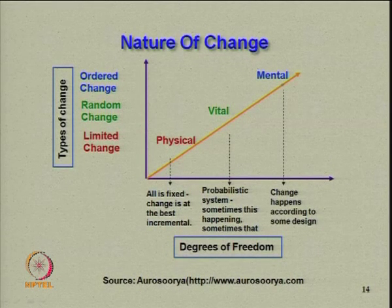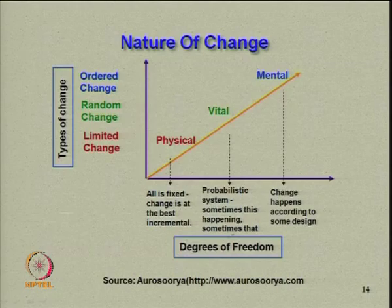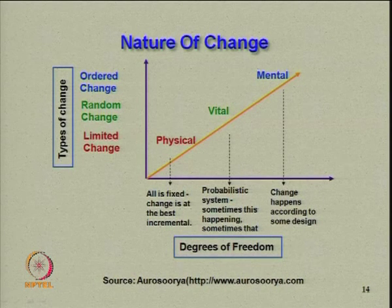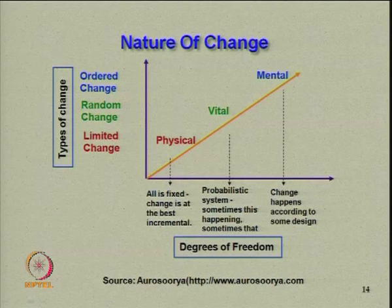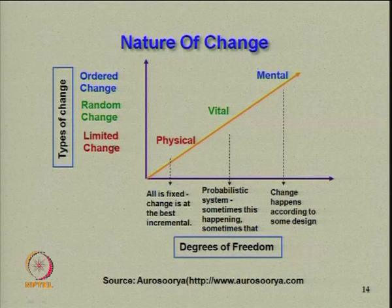Mental change is change that happens according to some design. Vital change is a probabilistic system — sometimes this happens, sometimes that; there is no predictive validity. Physical change means all is fixed; change is at best incremental. This is best understood in terms of types of change: ordered change, random change, and limited change.